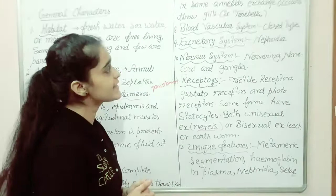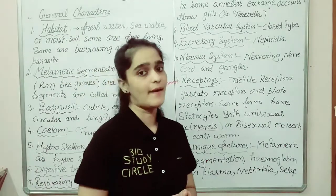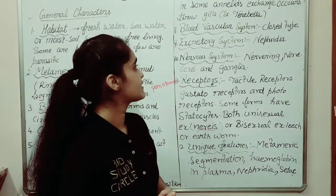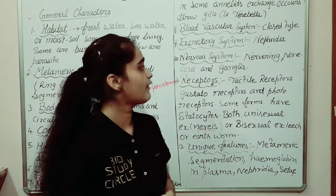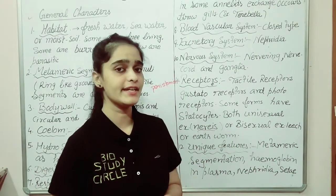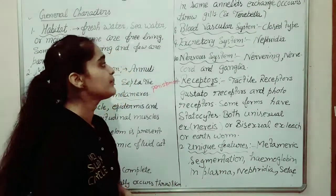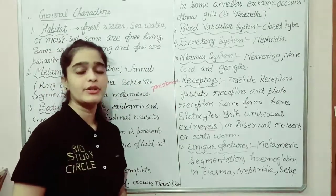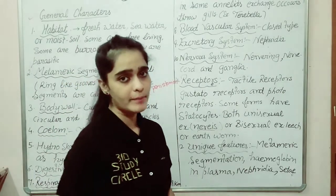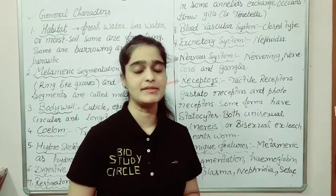If we talk about the excretory system, nephridia are present as excretory organs and excretion occurs with the help of nephridia. For the nervous system, nerve rings are present, a nerve cord is present, and ganglia are also present. Ganglia is the aggregation of nerves.